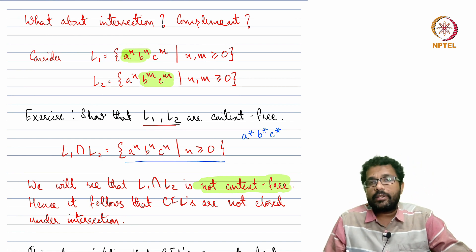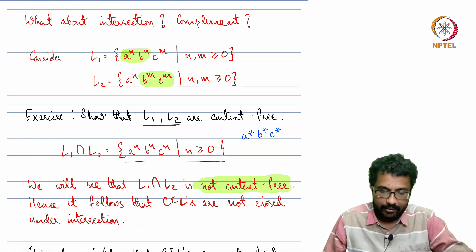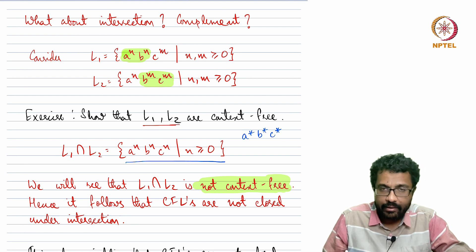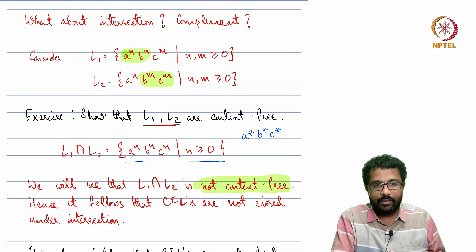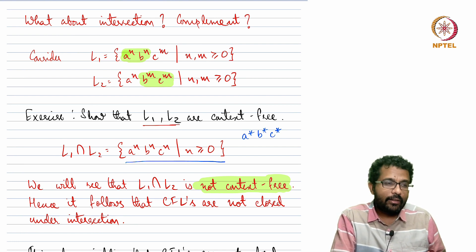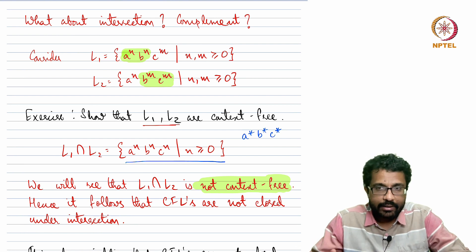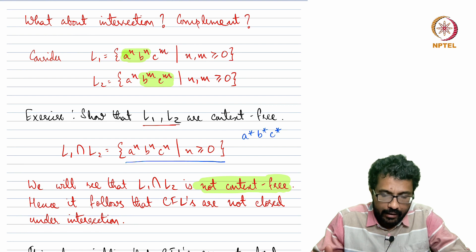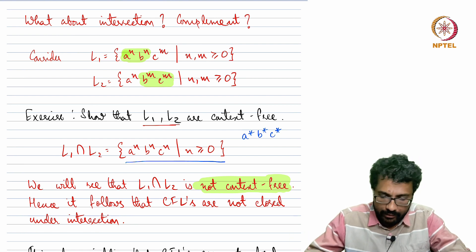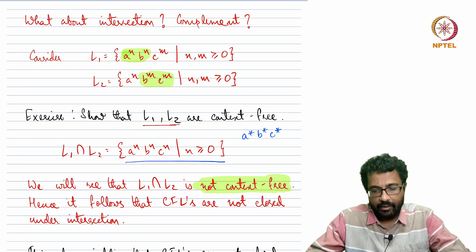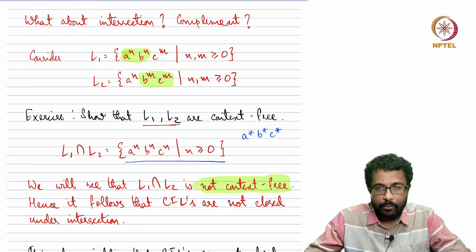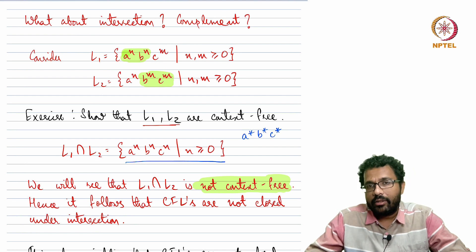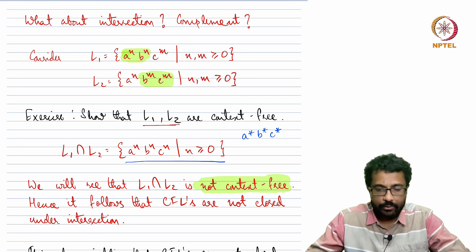Since a^n b^n c^n is not context-free, context-free languages are not closed under intersection. We have not yet proved how to show something is not context-free. The way we will show it is similar to the pumping lemma for regular languages — we will see a pumping lemma for context-free languages and use it to show this language is not context-free. So here we have two context-free languages L1 and L2 whose intersection is not context-free.